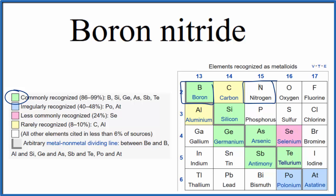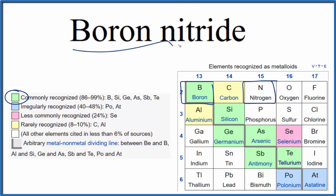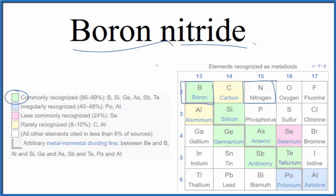So when we have a metalloid and a nonmetal, we consider that most often to be a molecular or covalent bond. So when we write the name, we're not going to worry about the charge. You might see this sometimes written as boron mononitride because of that covalent bond. However, boron nitride is a more commonly used name. So let's write the formula.